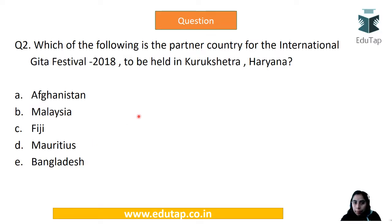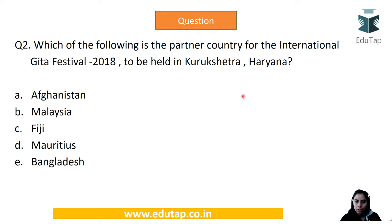Question 2: Which of the following is the partner country for the International Gita Festival 2018 to be held in Kurukshetra, Haryana — Afghanistan, Malaysia, Fiji, Mauritius, or Bangladesh? The correct answer is Mauritius. The Gita Festival will also be organized in Mauritius in 2019.